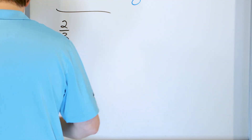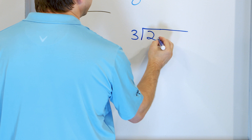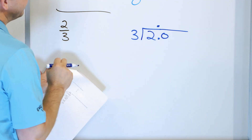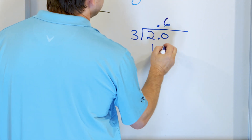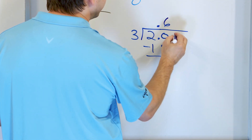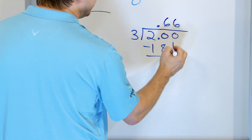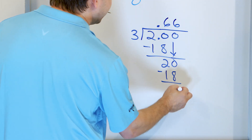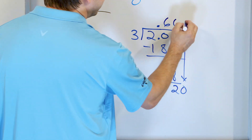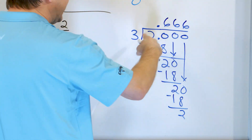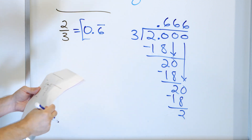Our last problem is two thirds — a repeating decimal, so be on the lookout. We take two and divide by three, making it 2.0. Three times six is 18 — subtract, 20 minus 18 is two. Add zero, bring down — again 20. Three times six is 18 again, remainder two again. We keep getting sixes and remainders of two forever, so two thirds is 0.6 with a repeating bar over the six.